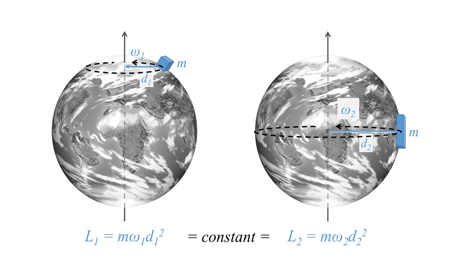This is one of several effects we can observe using space geodetic techniques. It quite nicely demonstrates that we are able to monitor effects indirectly by studying how our planet is spinning. By the way, this is the same physical phenomenon ice skaters use when they control their spin by moving their arms closer to or away from their bodies.